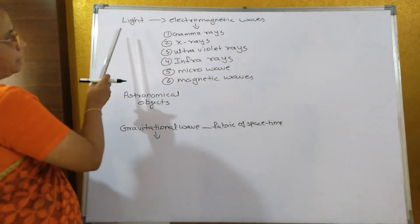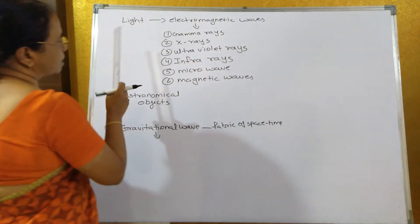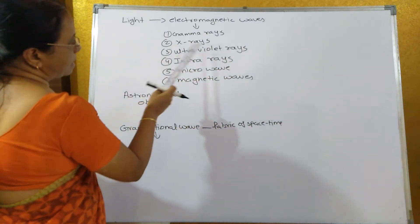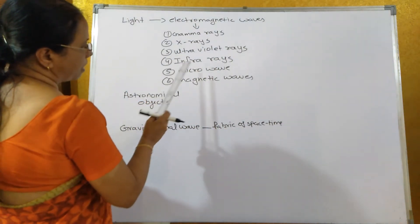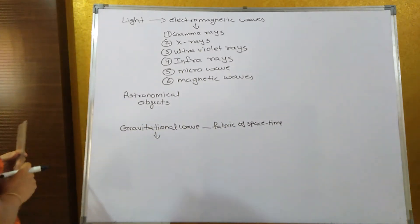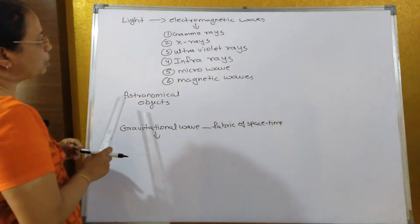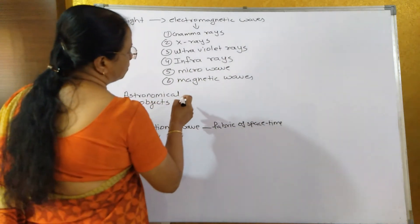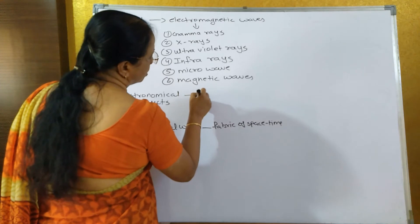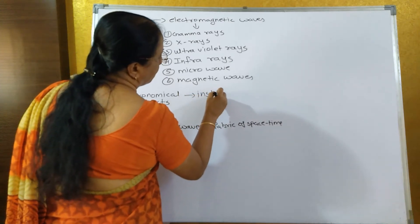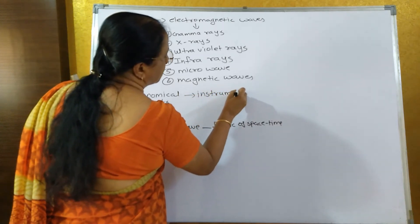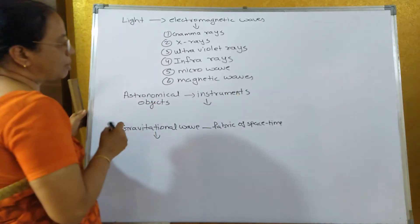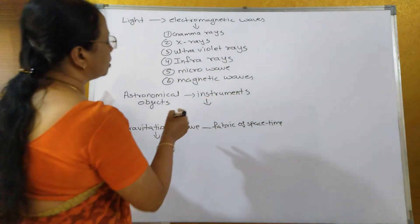Light is also known as electromagnetic waves. There are different types of electromagnetic waves such as gamma rays, X-rays, ultraviolet rays, infrared rays, microwaves, and radio waves. Astronomical objects emit these waves, and with the help of instruments we receive them, allowing us to detect and gain knowledge about the universe.